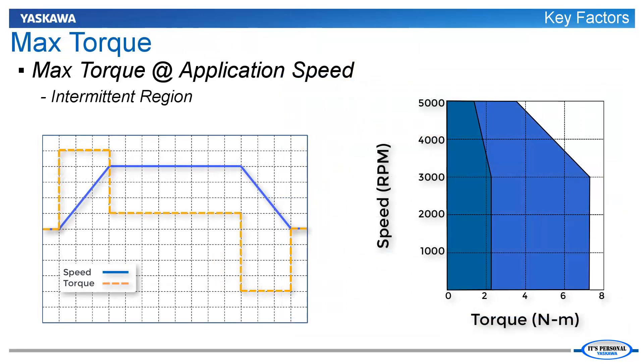It is important to ensure that the motor can produce the required max torque at the application speed. The max torque at application speed ideally falls within the intermittent region of the motor's speed torque curve. It can also fall within the continuous region, but this may be an indication that the motor is oversized.